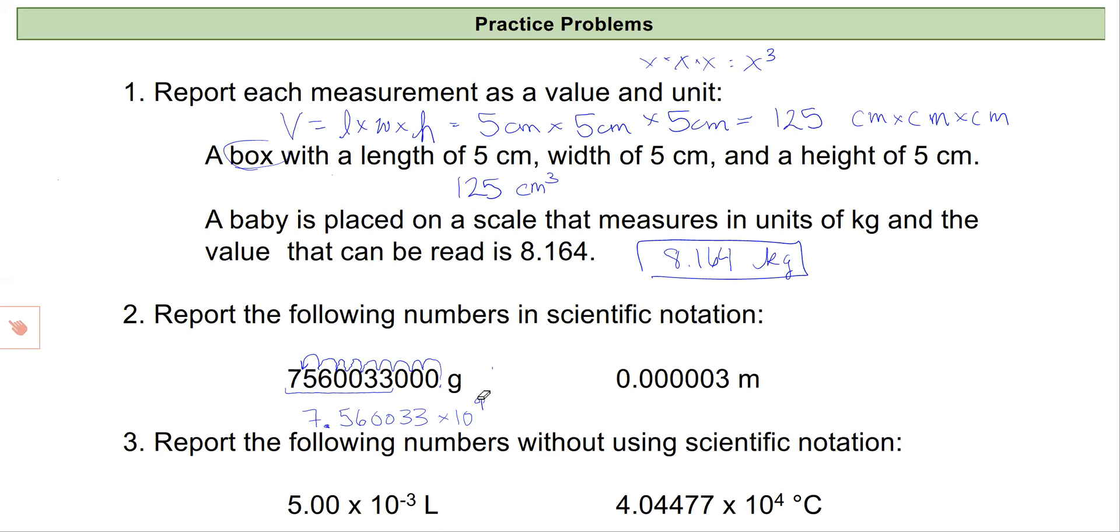So this will be times ten to the ninth. So my number is 7.5600033 times ten to the ninth. Now for my next one, my only non-zero number is this three, so I'm going to report this as three times ten.